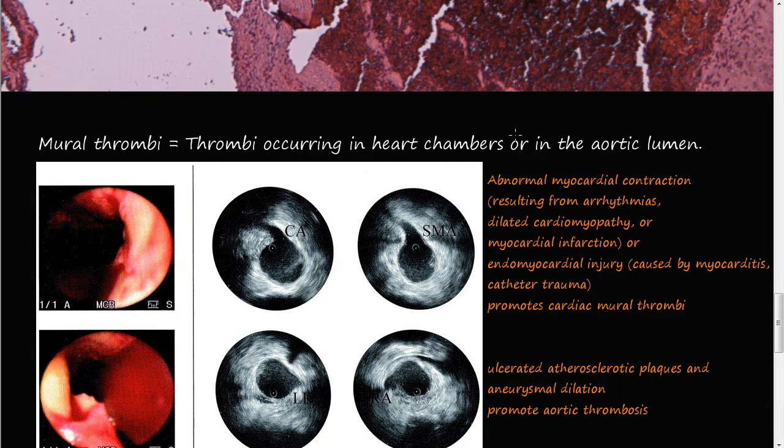Sometimes you can get mural thrombi that are offshoots. But for test purposes, you always want to put mural thrombi in heart chambers and aortic lumen.